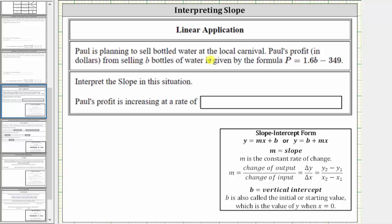Paul is planning to sell bottled water at the local carnival. Paul's profit in dollars from selling b bottles of water is given by the formula P = 1.6b - 40. Interpret the slope in this situation.